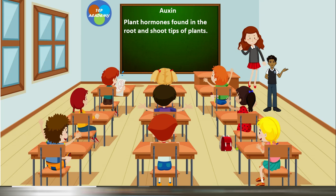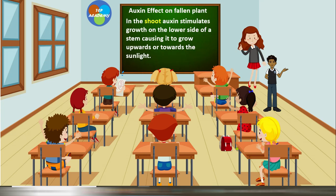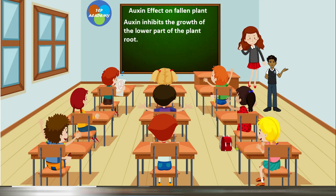What causes the plant to grow the way it does? Auxin, a plant hormone produced from the root and shoot tips of plants, regulates growth by causing cells to elongate. In the shoot, auxin stimulates growth on the lower side of a stem, causing it to grow upwards or towards sunlight. On the root, the effect is different — auxin inhibits the growth of the lower part of the root.